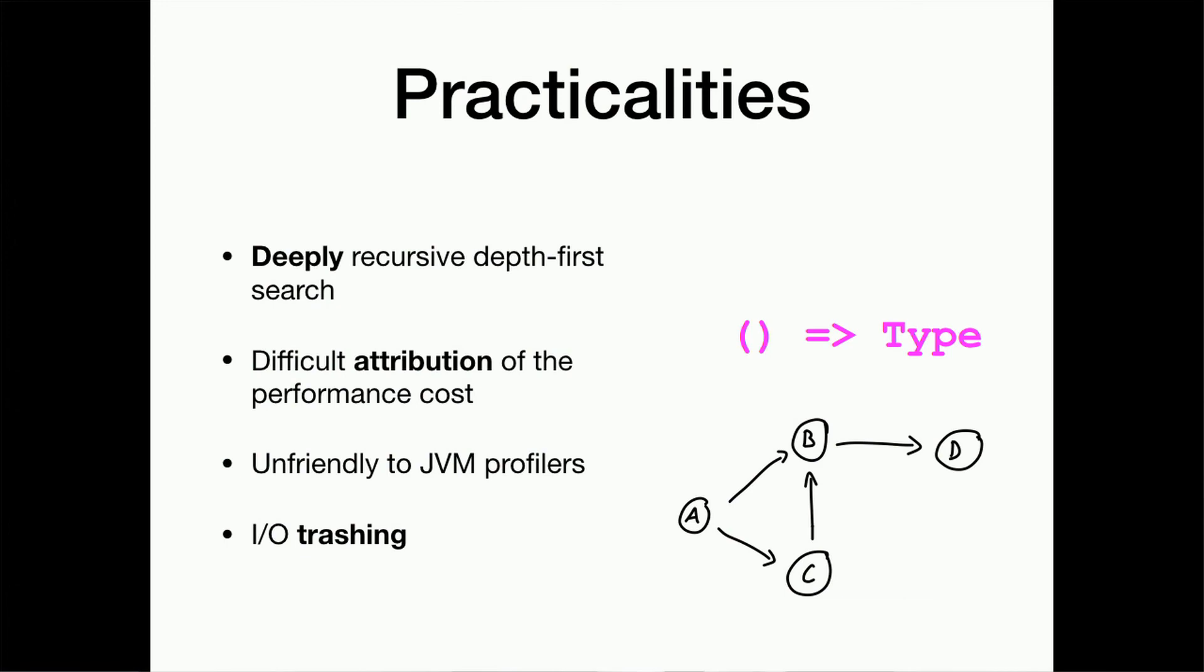What does this lead to is the difficult attribution of the cost. If you're looking at piece of code and trying to understand its performance characteristic, you never know whether this is slow or it just happens to trigger a long chain of computations. The other problem is that this deep recursive call chains are very unfriendly to JVM profilers. And lastly, there is this problem that some of the types you load are coming from binary files. And that leads to IO trashing.